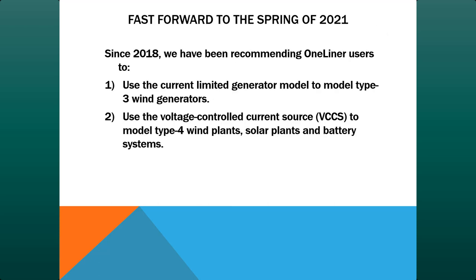Around 2018, we sent out recommendations to all One-Liner users: one, use the current-limited generator model to model type 3 wind converters; and two, use the voltage control current source to model type 4 wind plants, solar plants, battery systems, and so on.